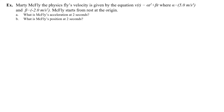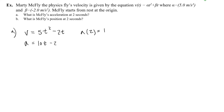For part a, I write the velocity as v equals 5t squared minus 2t. To get the acceleration, I take the derivative. So acceleration equals 10t minus 2. To find the acceleration at 2 seconds, I plug in t equals 2: 10 times 2 minus 2 equals 18. So the acceleration is 18 meters per second squared.